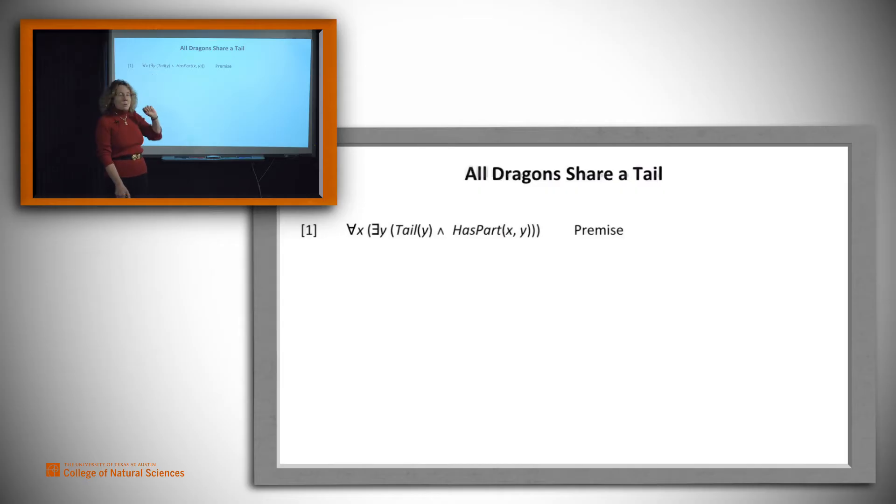For all x, there exists a y that's a tail, and x, the dragon, has y, the tail, as a part. So that's our premise. Let's see if we can prove that if that's so, then in fact all dragons share a tail.